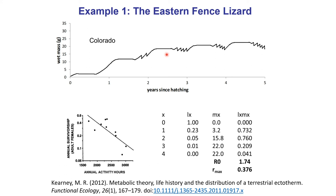It turns out that in this lizard, survivorship of adult females is negatively related to the number of hours of potential activity — which makes sense because mortality rate when you're out of your retreat site is much higher than when you're hiding. So by tracking how many hours the animal has been out, we get an idea of survivorship. From this, we can make a life table: for each year, what is the reproduction rate and what is the mortality rate? Multiplying those together gives the finite rate of increase — a measure of population growth.